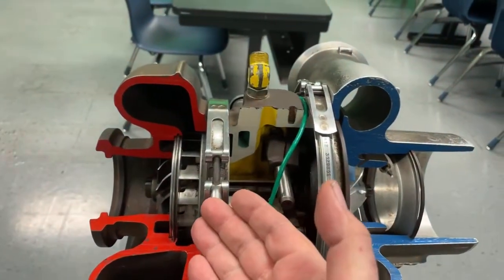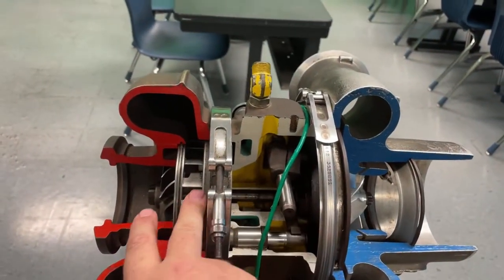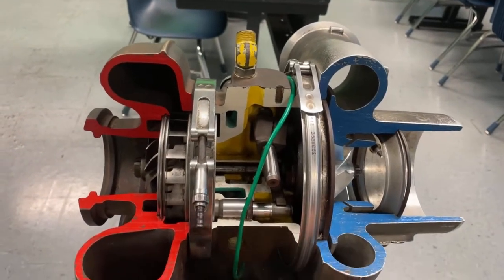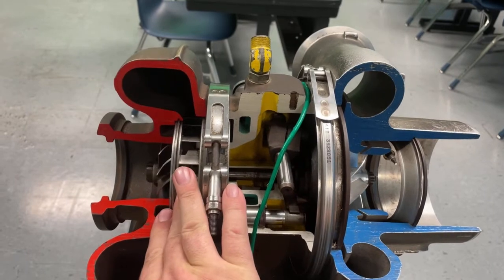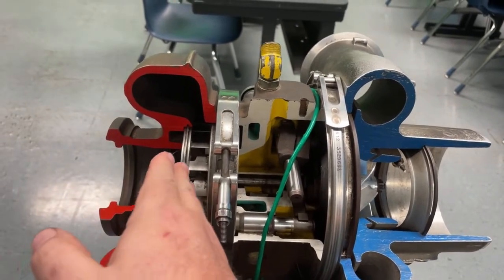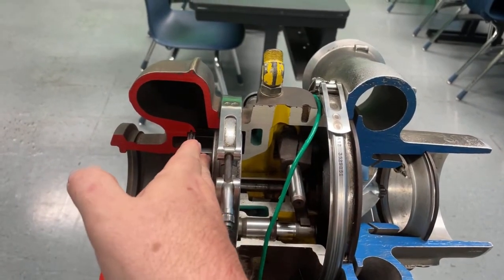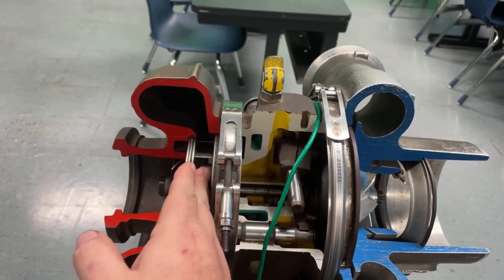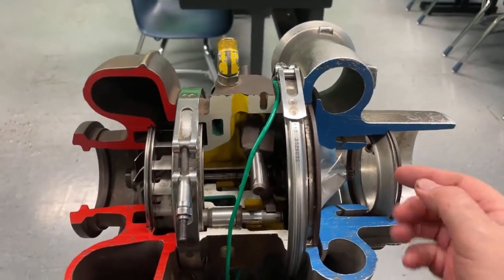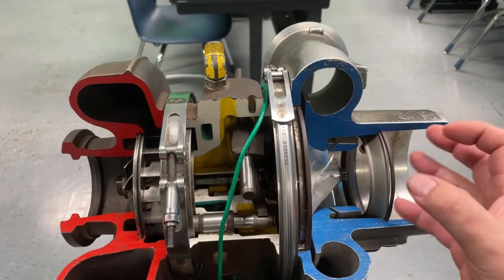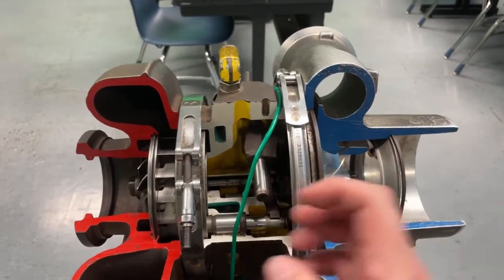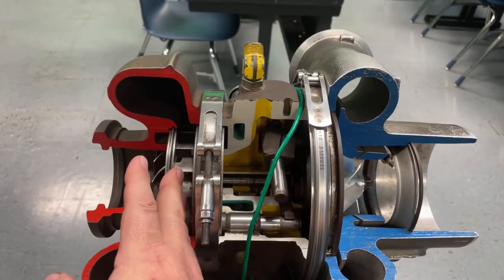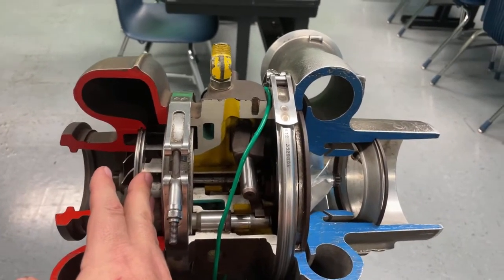And then the other thing that it does during braking is that these types of turbos, when you create more boost, you create a little bit of an exhaust restriction. So the exhaust flow is going to have a harder time getting through this housing because we're going to make it spend more energy spooling up this turbo. So not only is the compressor side compressing more air into the cylinders, making the braking more efficient, it's also making it harder for the exhaust to leave the engine, making the braking more efficient.